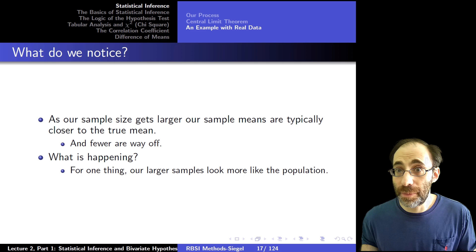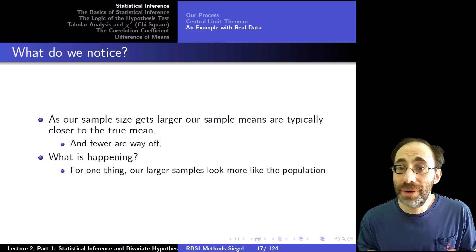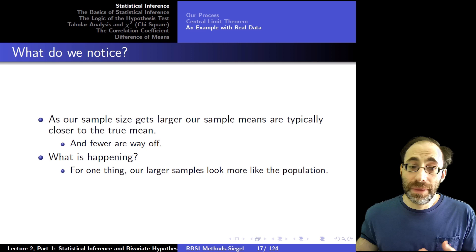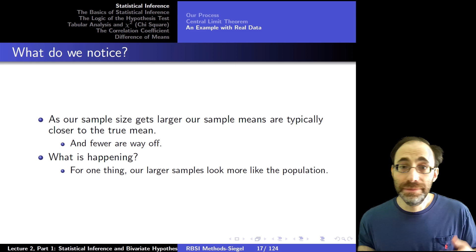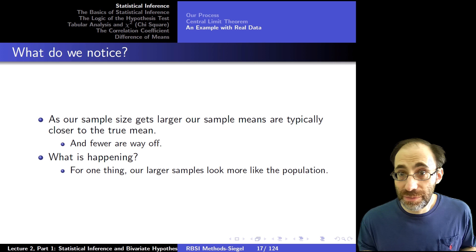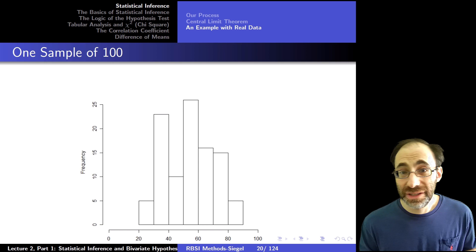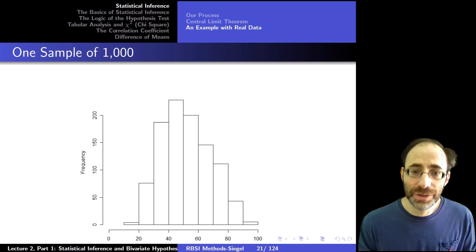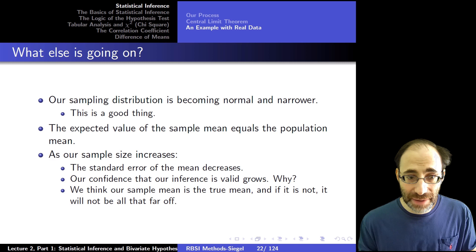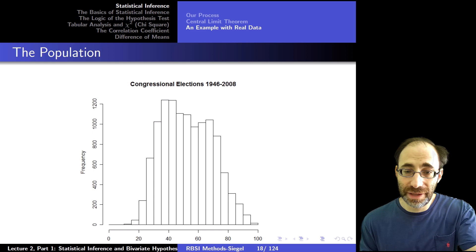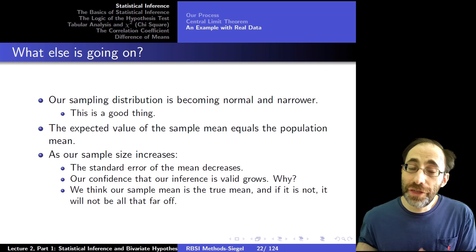As the sample size gets bigger, the means of each sample get closer to the true mean — that's always going to happen. It's intuitive: as I have a larger proportion of the population in my sample, the sample mirrors the population more closely, and so its parameters mirror the traits of the population more closely. Here's the population distribution, here's one sample of 10 — looks very far from the population. Here's one sample of 100 — closer but still pretty different. A sample of 1,000 is closer still, much closer.